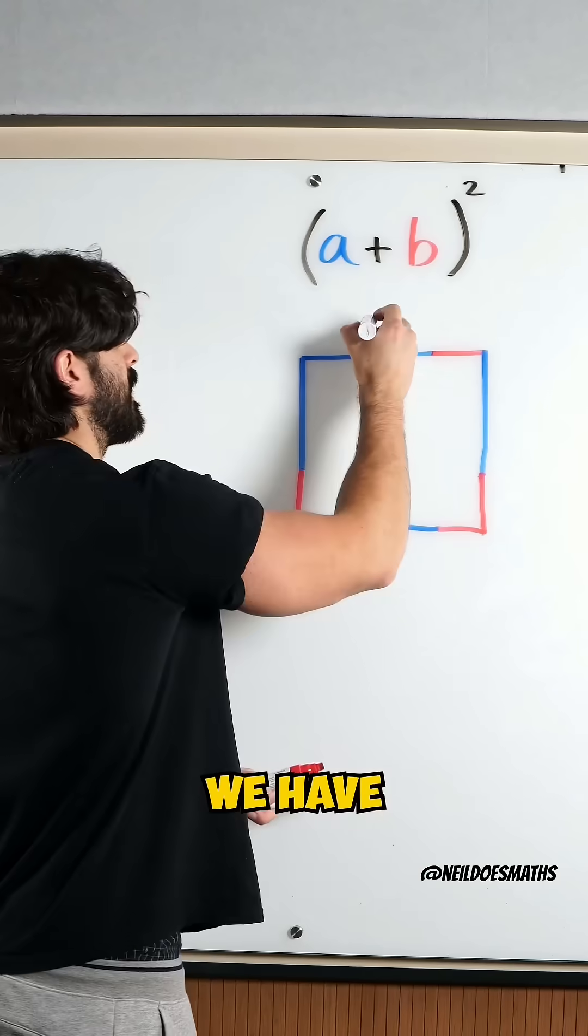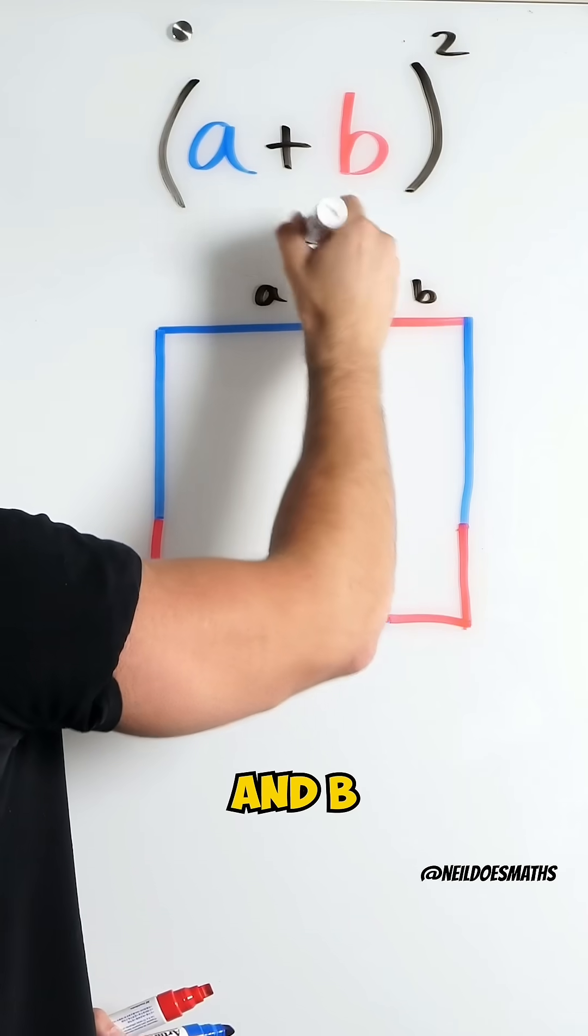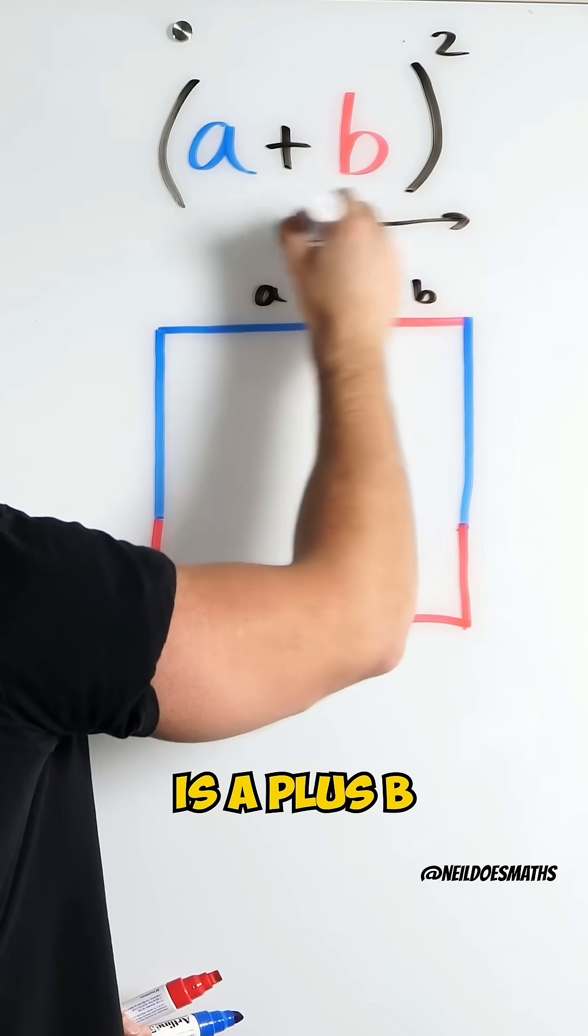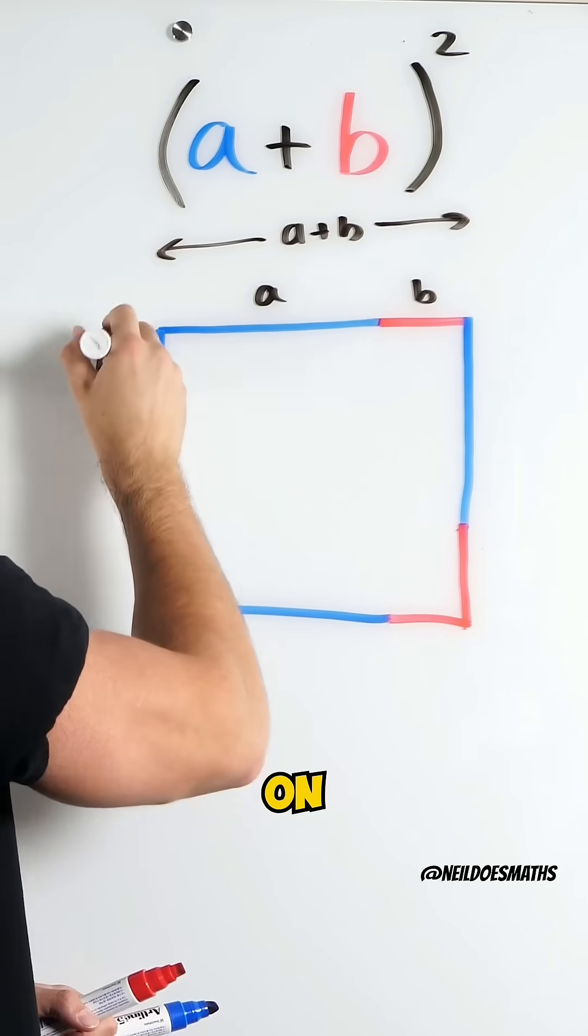We have A and B, so this whole length is A plus B. And that's the case on each side.